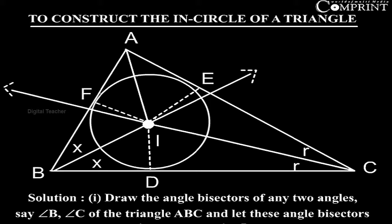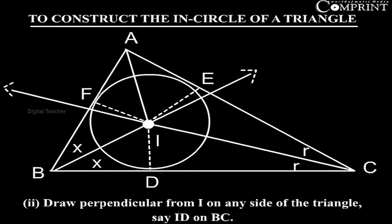Solution: draw angle bisectors of any two angles, say angle B, angle C of the triangle ABC and let these angle bisectors intersect at a point I. Draw perpendicular from I on any side of the triangle, say ID on BC.